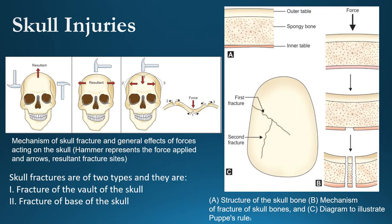The skull is a diploë bone having an outer table and inner table. The outer table is thick and strong; beneath it is spongy bone (marrow), and beneath that is the inner table. This diploë structure is elastic. When force is applied, the outer table and spongy bone first elasticize, and with more force the bone breaks, causing a linear fracture. The sequence of fractures can be determined by Puppe's rule.